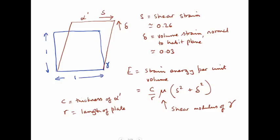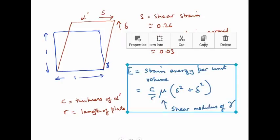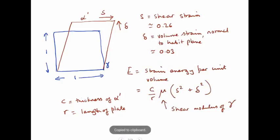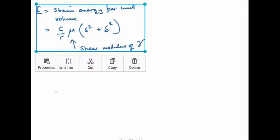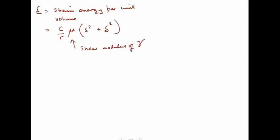So let's try and understand where this equation comes from. It was derived originally by Christian in 1958, and he used Eshelby's theory to work the equation out. The trouble is Eshelby's theory is really quite complicated, and what I'm going to do is explain to you the physical basis of this equation using simpler methods.